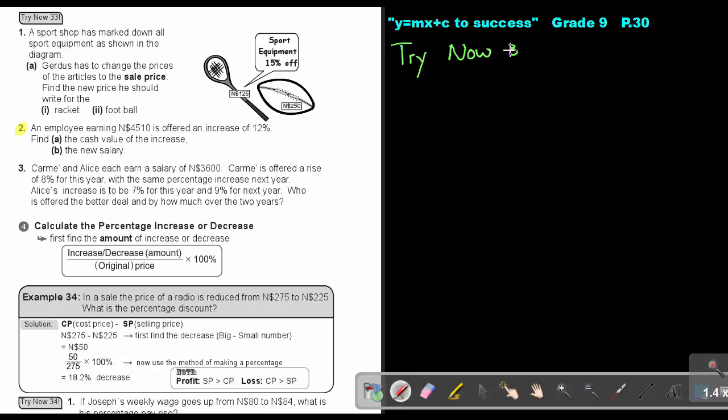Try now 33, and we are going to do number two. Let's start with the first one. An employee earning $4510 is offered an increase of 12%. Find the cash. So only method one will work on this one. So I'm first going to work out what is 12% of that 4510, and that will give me a total of 541.20. So find the cash value of the increase. So the cash value of the increase will be 541.20.